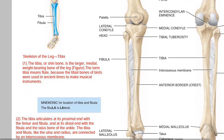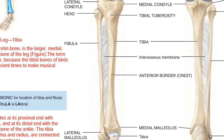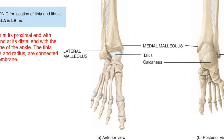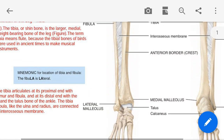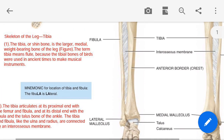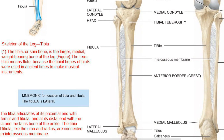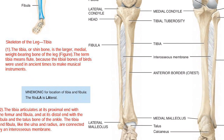So in this lecture, I am going to discuss the leg bones — the tibia and fibula — and the bones of our foot: the tarsals, metatarsals, and phalanges. The important thing is also the joints which are present between these foot bones and the tibia and fibula, and how these bones are associated in these joints.